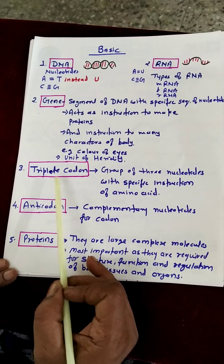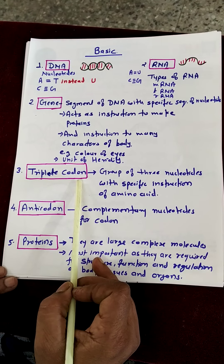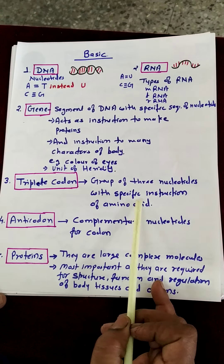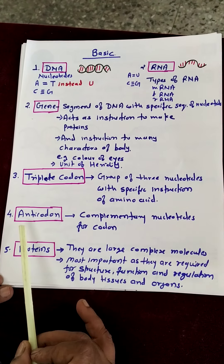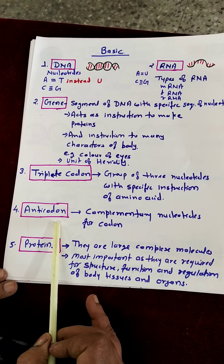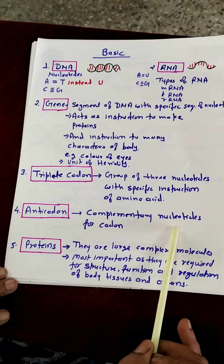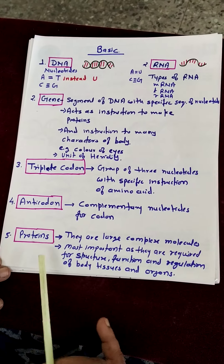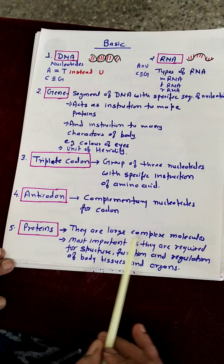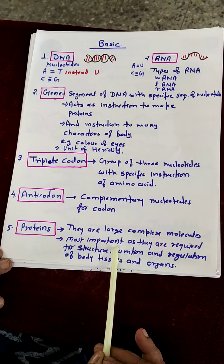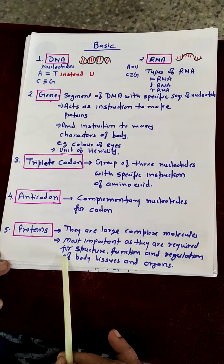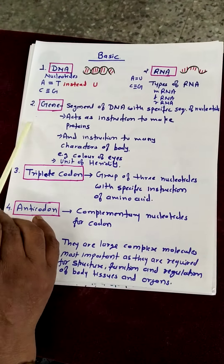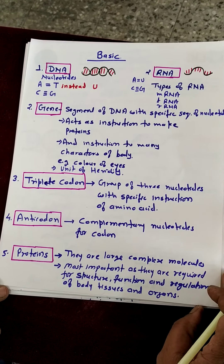A new term in central dogma is the triplet codon. What is the meaning of triplet codon? It is the group of three nucleotides with a specific instruction for amino acids. Another term is anticodon. Anticodons are also nucleotides but they are complementary to the triplet codons. Proteins are large complex molecules, most important as they are required for structure, function, and regulation of the body tissues and organs.